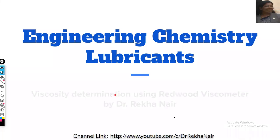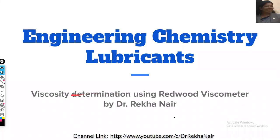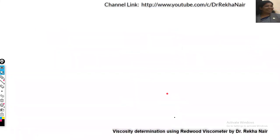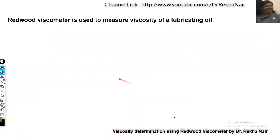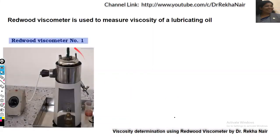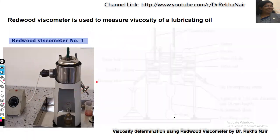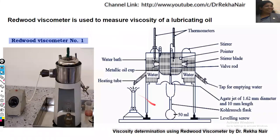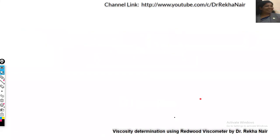Hello everyone. Today we are going to watch a small video on viscosity determination using Redwood Viscometer. Redwood Viscometer is used to measure the viscosity of lubricating oil. Here we have the Redwood Viscometer which is available in the laboratory. This is the labeled diagram for Redwood Viscometer number 1.